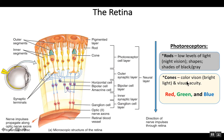The cones are photoreceptors that respond more to color. They're also much better during bright light and they give us our visual acuity — sharpness of vision. If you think about your best vision, it is your central vision, and that is largely because we have a high concentration of cones at our macula.